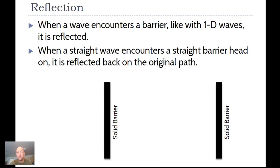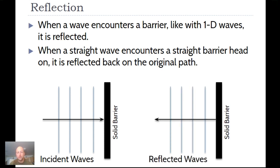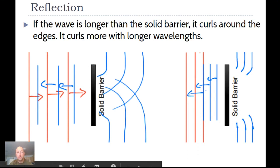When a wave encounters a barrier, like with one-dimensional waves, it is reflected. When a straight wave encounters a straight barrier head-on, it is reflected back on the original path. The waves themselves do not actually change — whatever you see coming in as the incident waves is also what you see in the reflected waves.